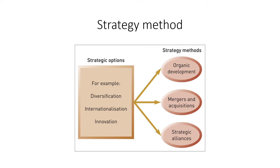There are different types of strategic alliances. To name a few: there could be a joint venture, a build-operate-transfer option, greenfield development, and many other types through which you can increase your operations. These strategic alliances are mostly used in internationalization, but you can also have strategic alliances for innovation and diversification.